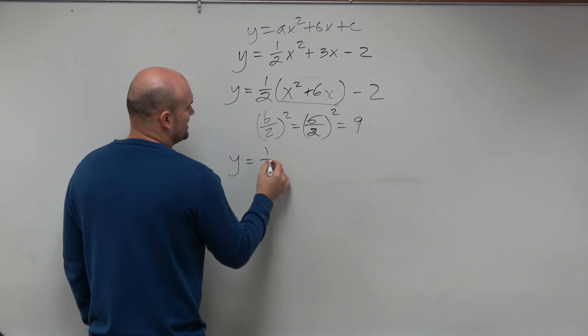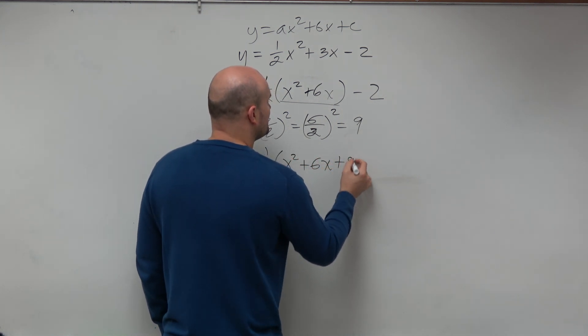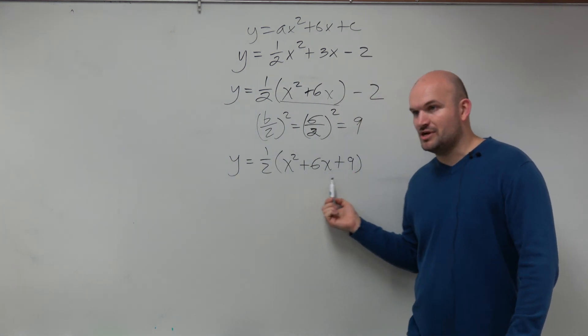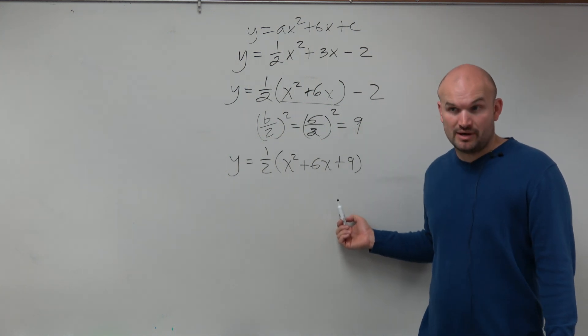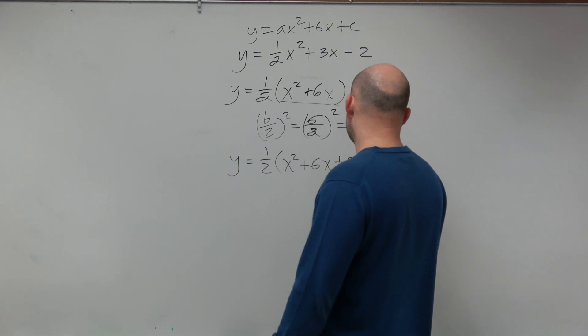So therefore, we are going to take that 9, and we're going to add it inside of our parentheses. Why add it inside our parentheses? Because that 9 has now created a perfect square trinomial. Remember, all perfect square trinomials can be factored to binomials squared. But since we're adding that here, we have to subtract that.